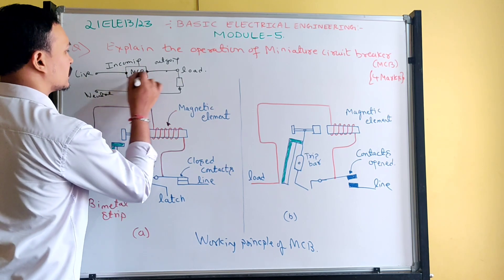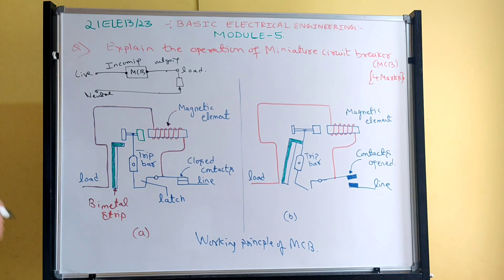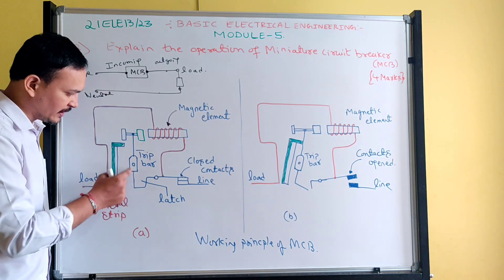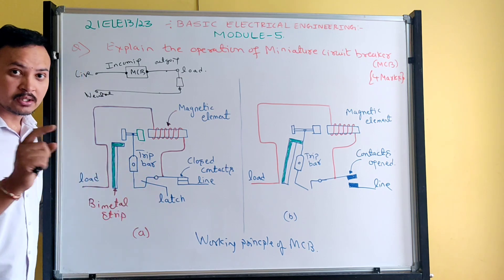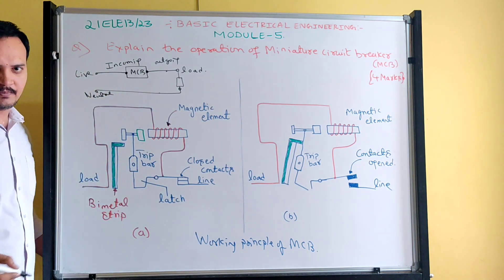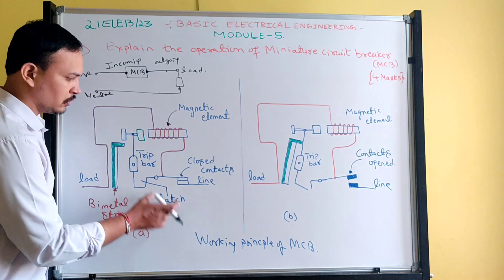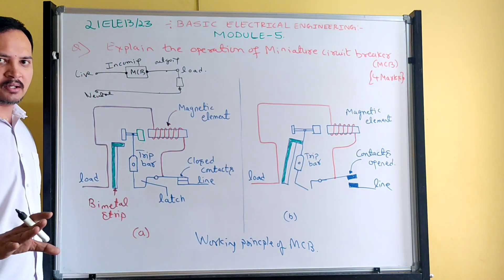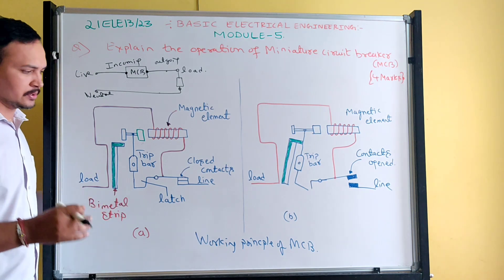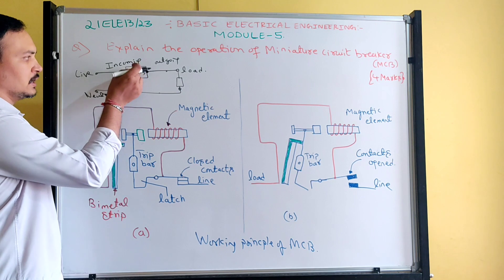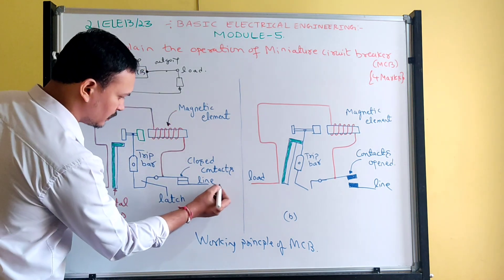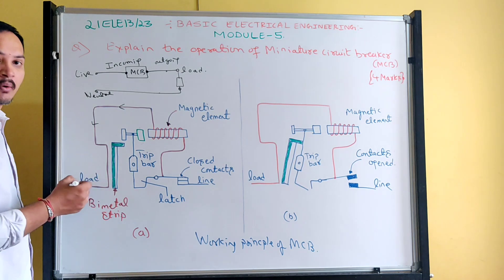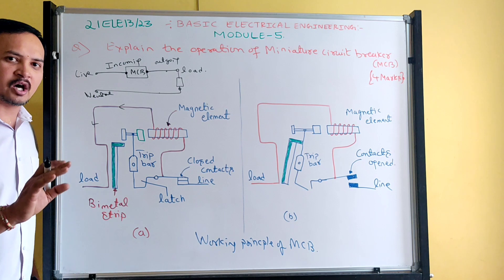Now, actual working — what happens. This is called the bimetallic strip, and this is the trip bar. The trip bar is connected to the latch. The latch is the heart of the MCB — this is very very important. Without this, the contacts will not open and close. Figure A is normal condition — no fault, no overload, no short circuit. Under that condition, contacts are closed. Once I close the contact of MCB, supply gets connected, and current passes through the magnetic coil. Load will get continuous supply under normal condition.